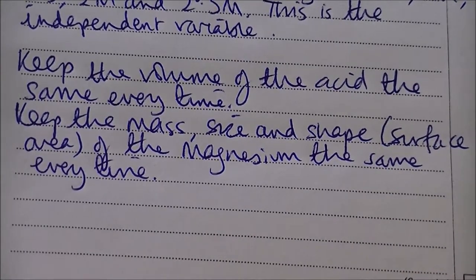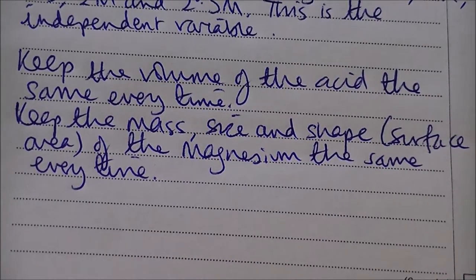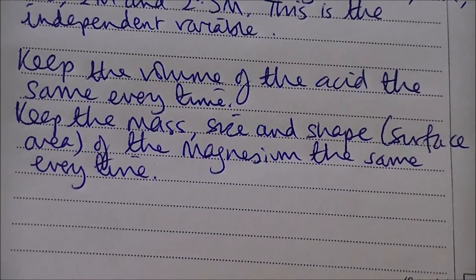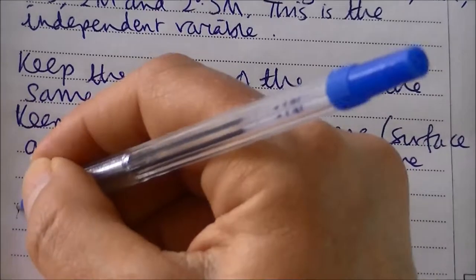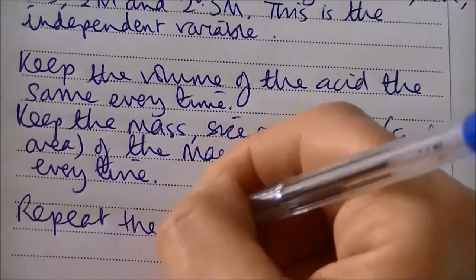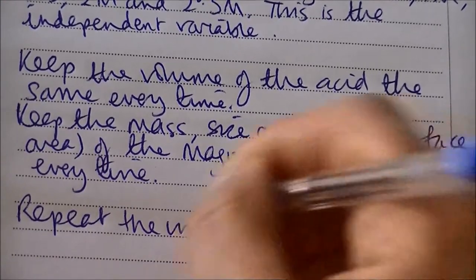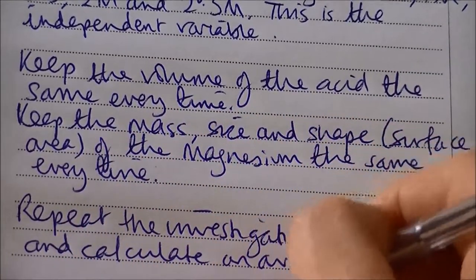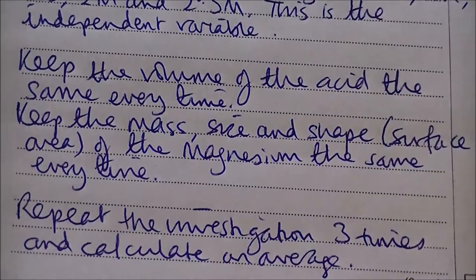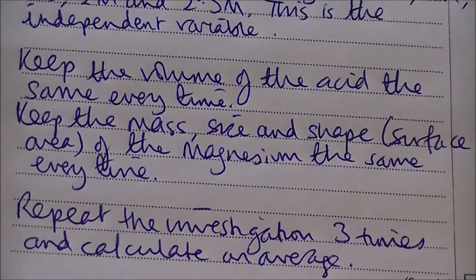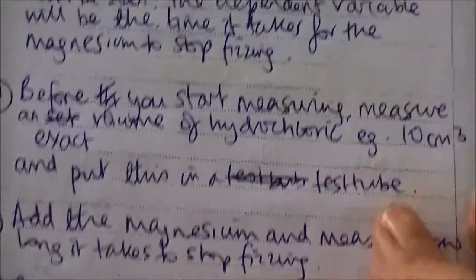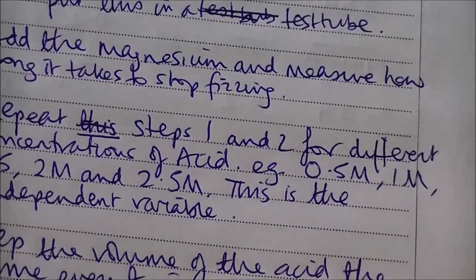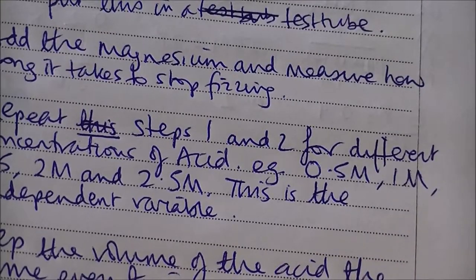The final stage we said we'd include is to repeat the investigation. Reliable means repeat the experiment. Repeat the investigation three times and calculate an average. That will definitely get you six out of six marks: measurements, names of apparatus, what we're going to do, examples of everything we're going to keep the same, examples of things we're going to change, calling them the correct term — the independent variable — and making sure we're talking about the dependent variable using the correct vocabulary. That's a definite six out of six answer, and that's how you write a high quality method.